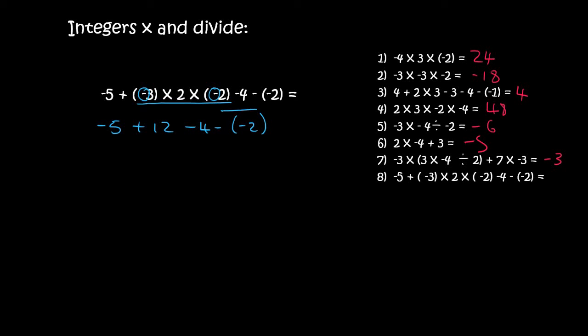Then we can remove these negatives over here. If you have a negative and a negative, that's the same as a positive. Now we only have plus and minus, so we move from left to right. So if you owe people 5 rand, and then someone gives you 12 rand, well, then all of a sudden, you have 7 rand.